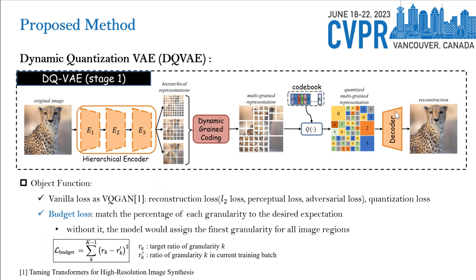The objective function of DQVAE has two parts. The first part is the same as VQGAN. The second part is our proposed budget loss, which aims to match the percentage of each granularity to the desired expectation, so the model assigns the finest granularity for important image regions. We implement the budget loss as a mean squared loss.